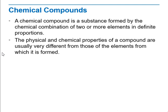Chemical compounds. A chemical compound is a substance formed by the chemical combination of two or more elements in definite proportions. The physical and chemical properties of a compound are usually very different from those of the elements from which it is formed. We are going to talk about this and much more during this week.